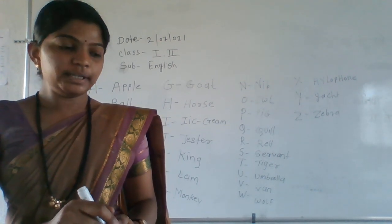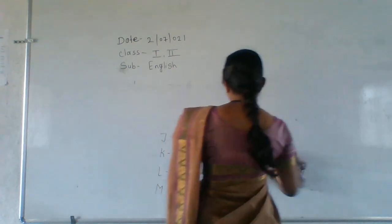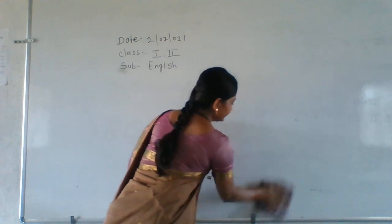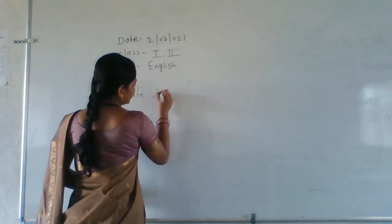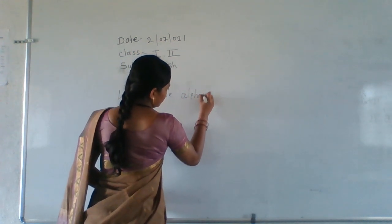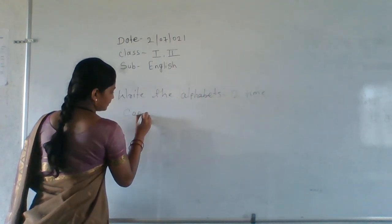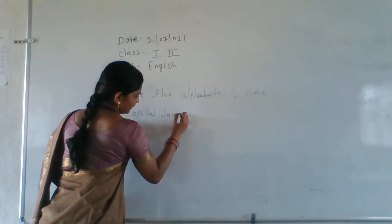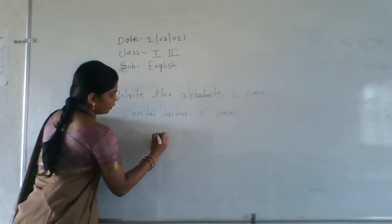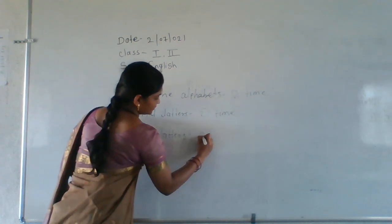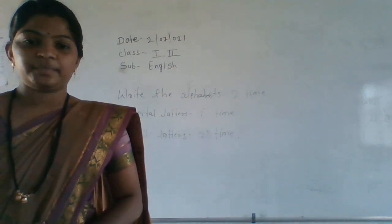All of you, write down your homework in your C.W. book. Writing alphabets two times — capital letters two times and small letters two times.